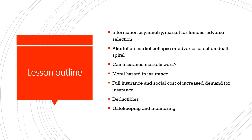In this lesson, we will cover the following topics: information asymmetry in the health insurance market, the literature on market for lemons and adverse selection, Akerlof's market collapse or adverse selection death spiral, whether health insurance markets can work in real practice, the concept of moral hazard in insurance, demand for insurance under full insurance versus co-payment or co-insurance conditions, deductibles, gatekeeping, and monitoring.